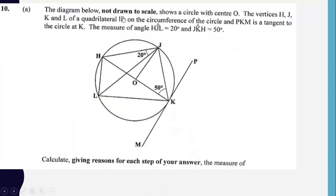The diagram below, which is not drawn to scale, shows a circle with center O. The vertices H, G, K, and L of a quadrilateral lie on the circumference of the circle, and PKM is a tangent to the circle at K. The measure of angle JL is 20 degrees and GK is 50 degrees.